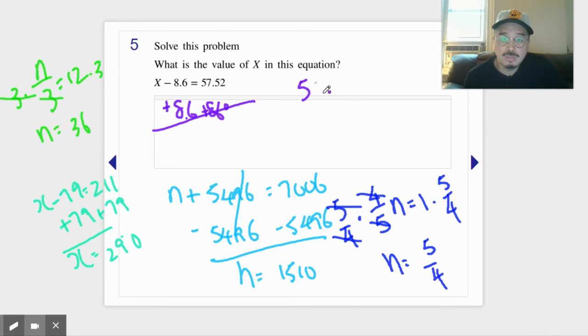Plus 8.6 like so. Now when you add decimals, remember you line up the decimals, that's the most important. So 5 plus 6 is 11, 1 plus 7 is 8, 8 plus 8 is 16, 5 plus 1 is 6. So it's 66.12.